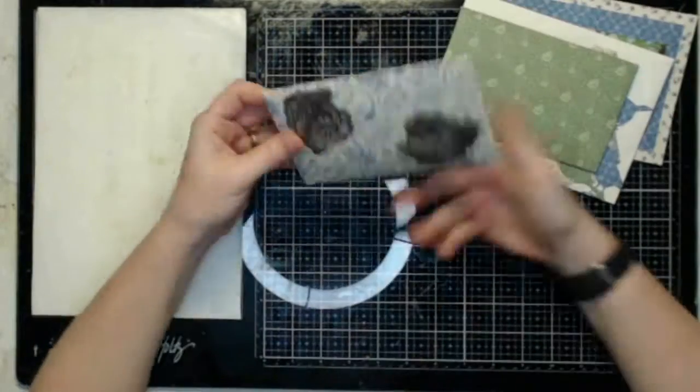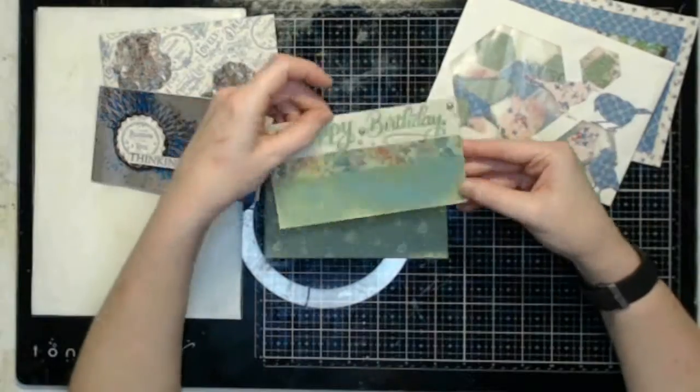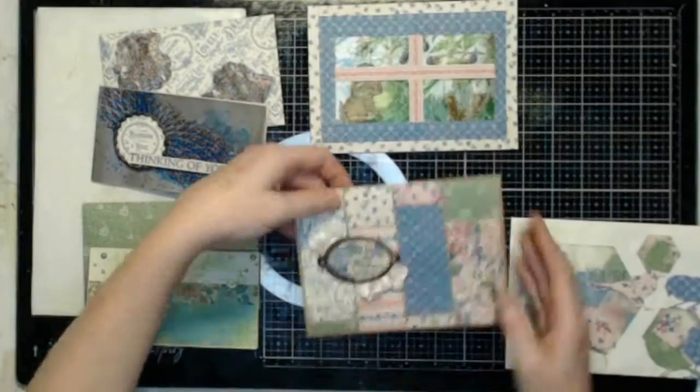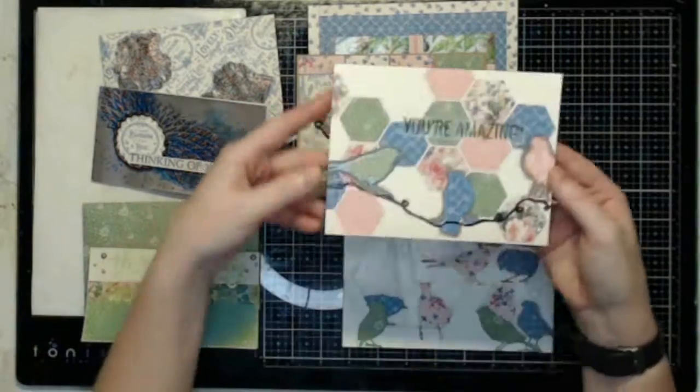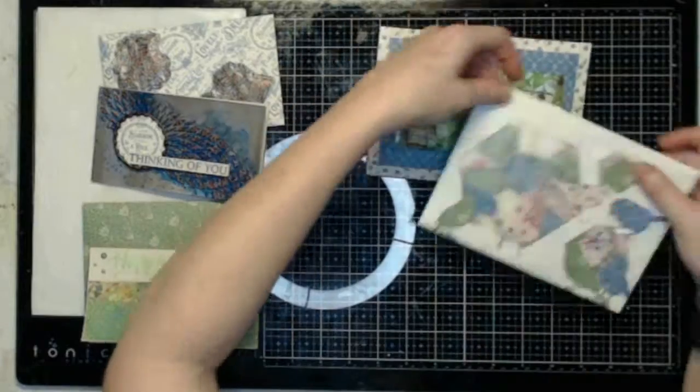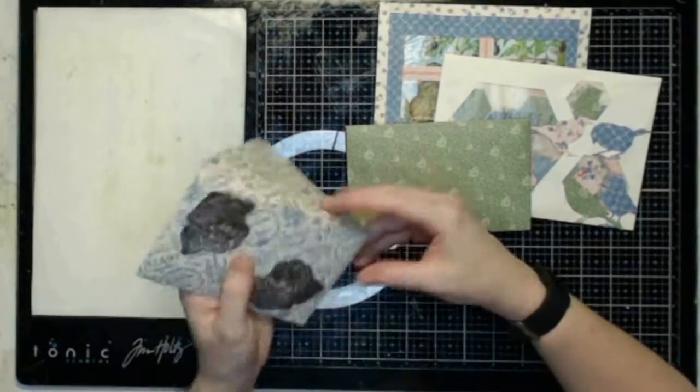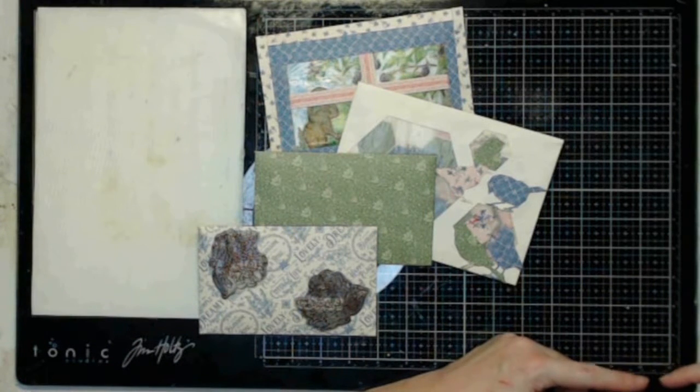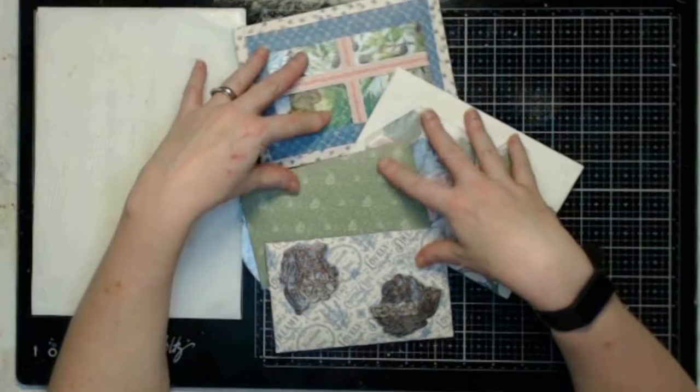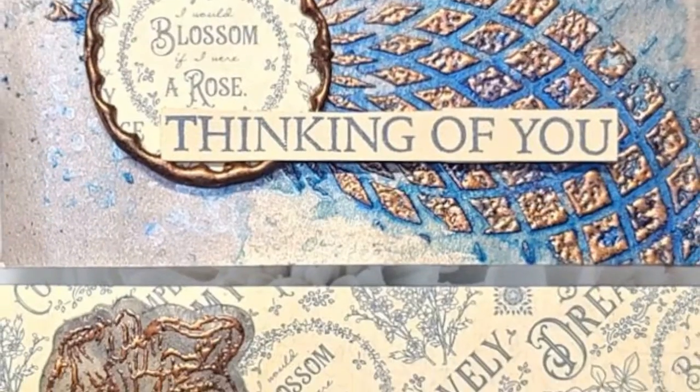Alright, I have four cards made up using this month's Cards, Tags, and More Kit, the Lindy's from this month's Mixed Media Kit, some items from previous months, and some items from my stash. I hope that you enjoyed these example cards and they gave you some ideas of what you can do using this month's Cards, Tags, and More Kit. Don't forget to subscribe to the channel, turn on notifications if you haven't already, and give us a thumbs up. Feel free to share this video. Thank you, and I will see you again next month.